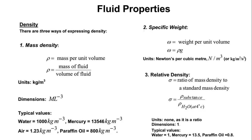Volume can be defined as mass over density. So substituting, specific weight — with symbol omega (ω) — is equal to rho times g (ρg). Whenever we see ρg, this is known as specific weight.